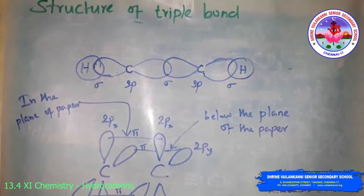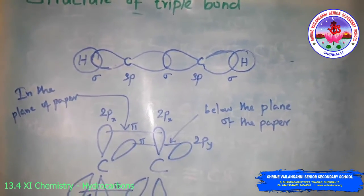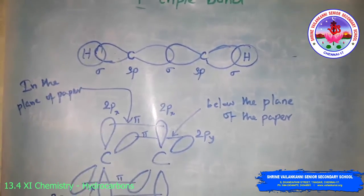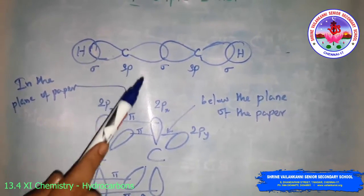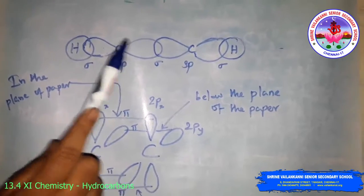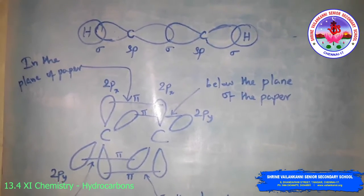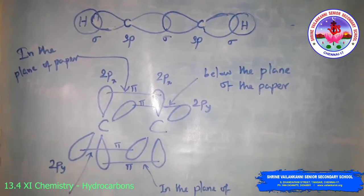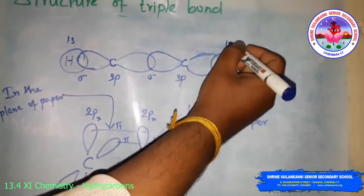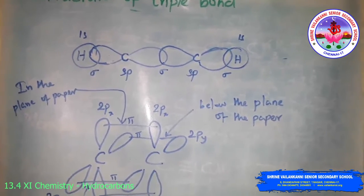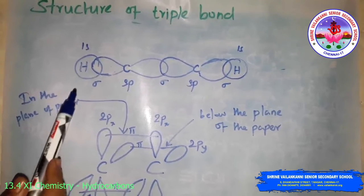Structure of the triple bond: ethyne is the simplest molecule of the alkyne series. Each carbon atom of ethyne has two sp-hybridized orbitals. The carbon-carbon sigma bond is obtained by head-on overlapping of the two sp-hybridized orbitals of the two carbon atoms. The remaining sp-hybridized orbital of each carbon undergoes overlapping with the 1s orbital of each hydrogen atom, forming C-H sigma bonds. The bond angle is 180°.